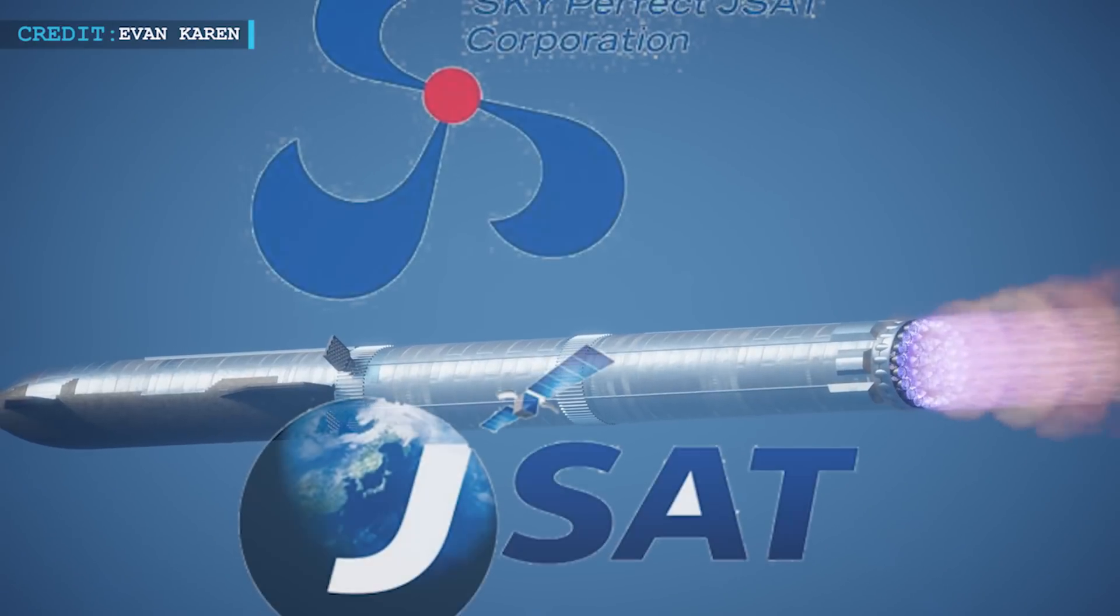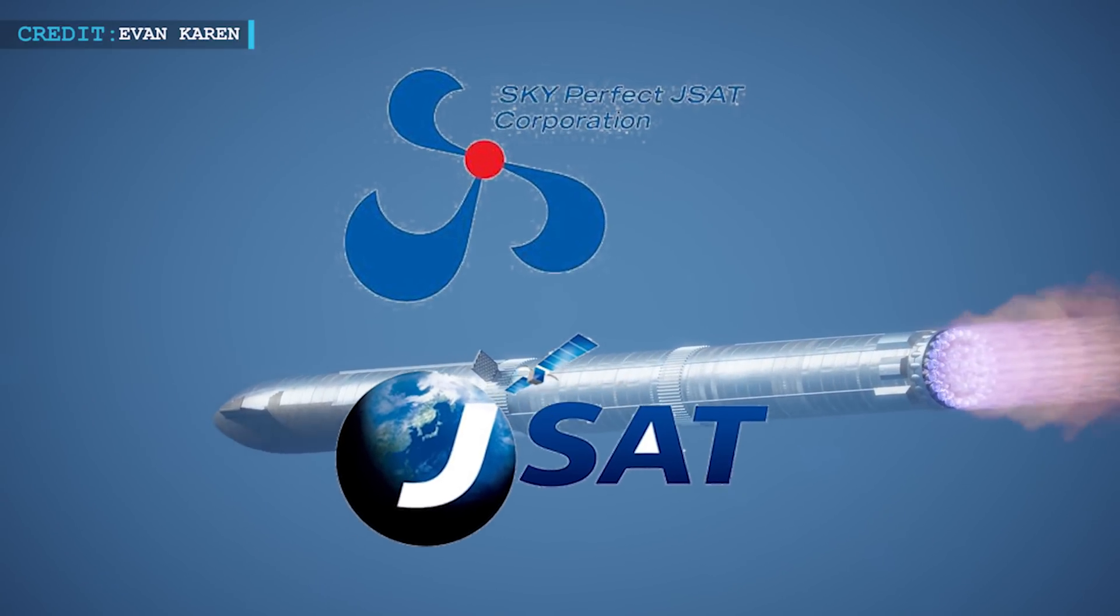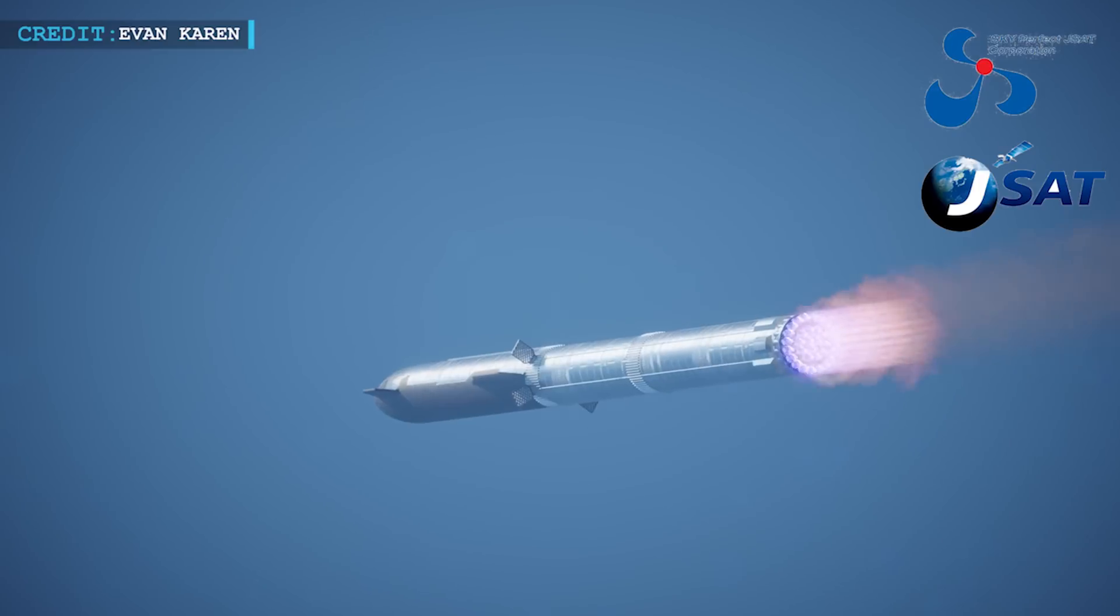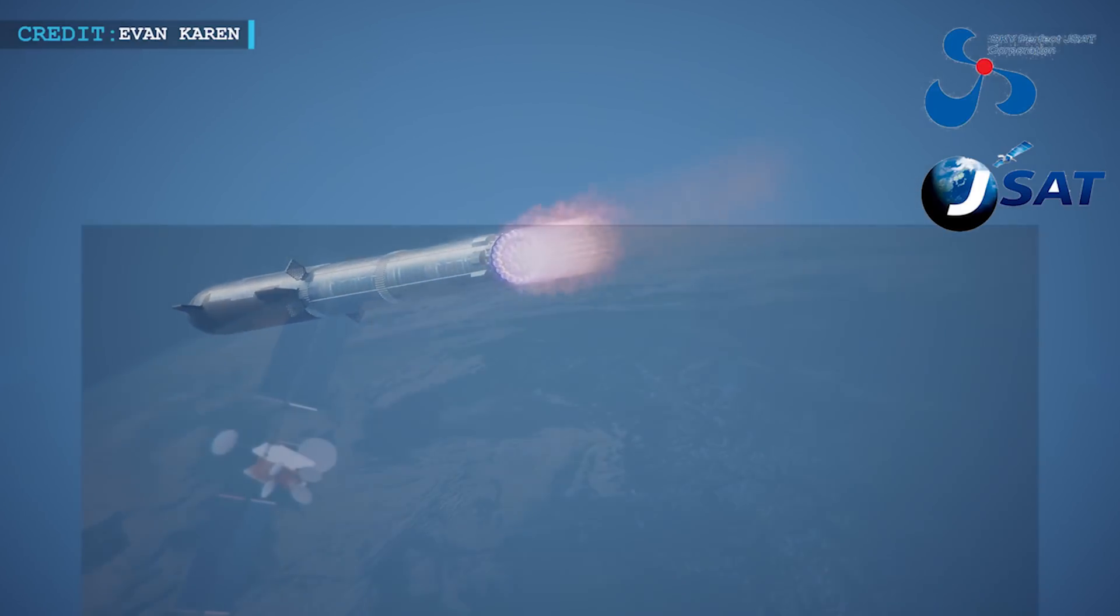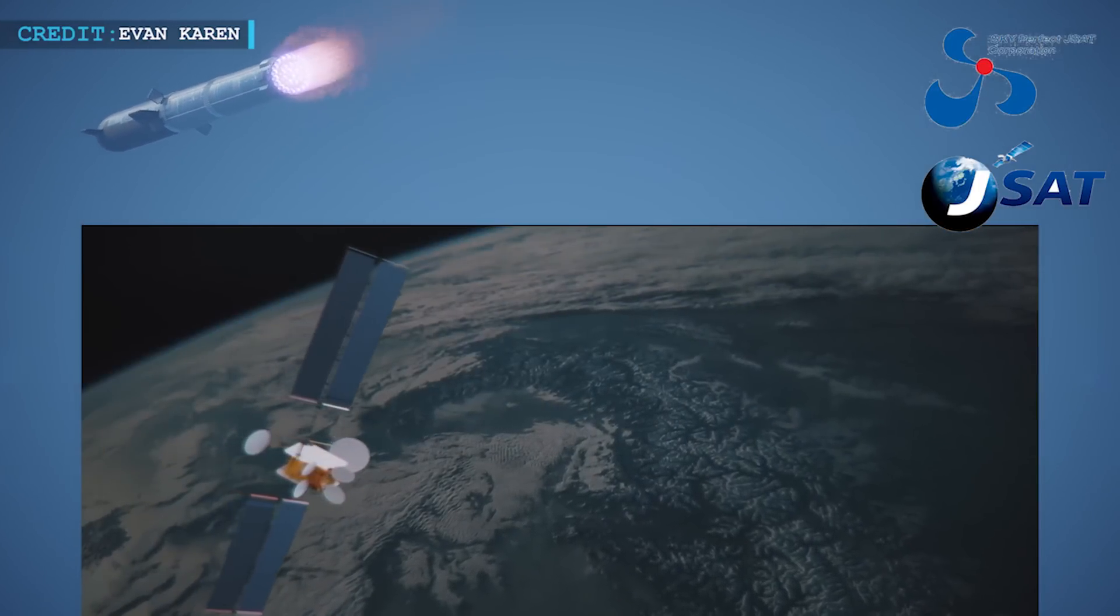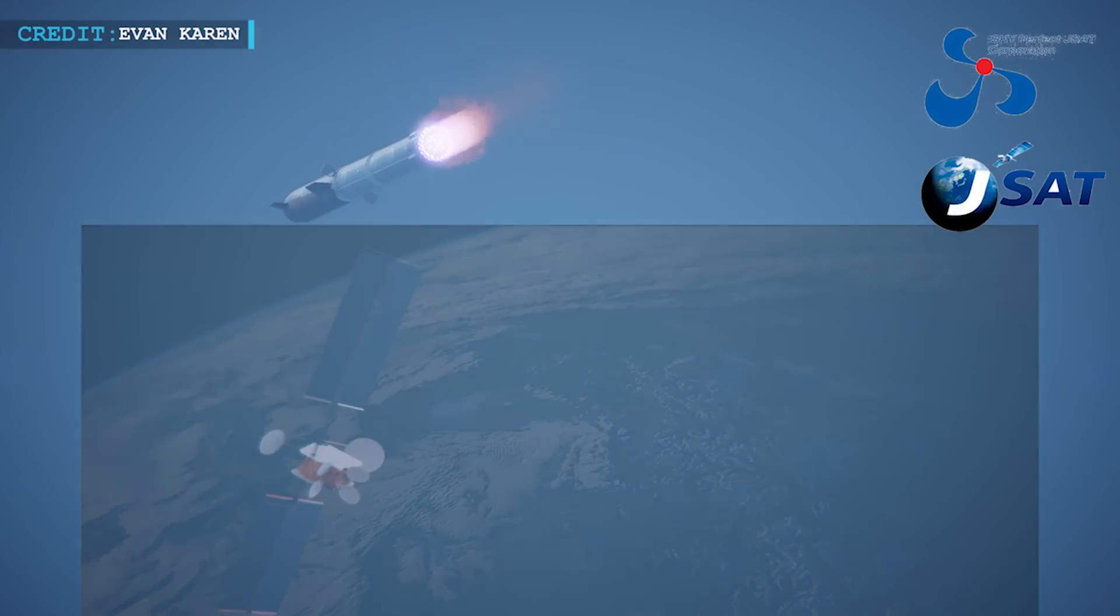Sky Perfect JSAT, a Japanese satellite operator, stated on August 18 that it had chosen SpaceX's Starship rocket to put its Superbird 9 satellite into Geostationary Transfer Orbit as early as 2024.